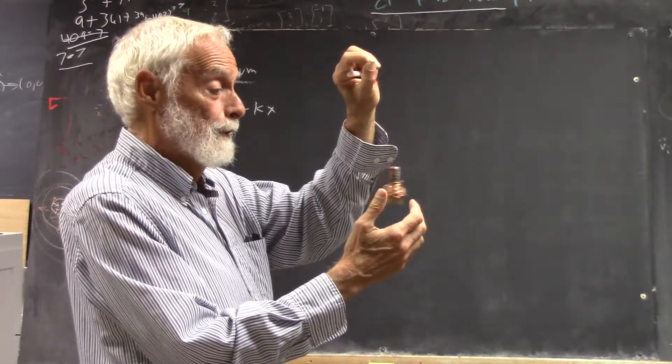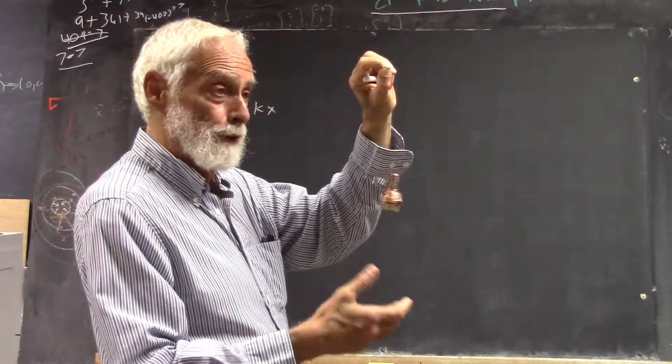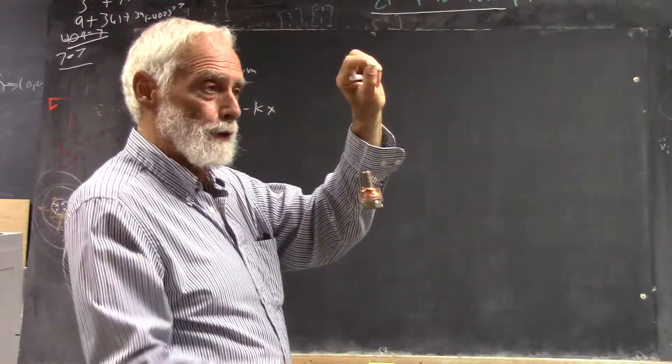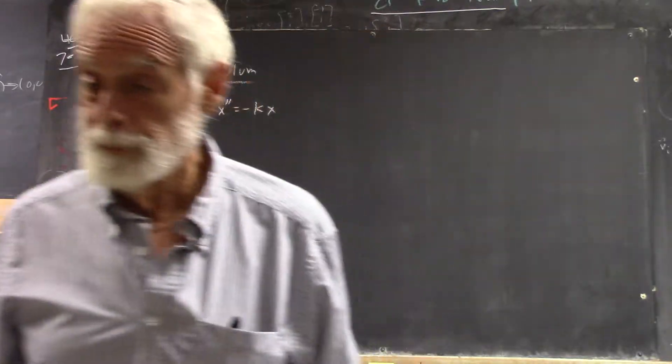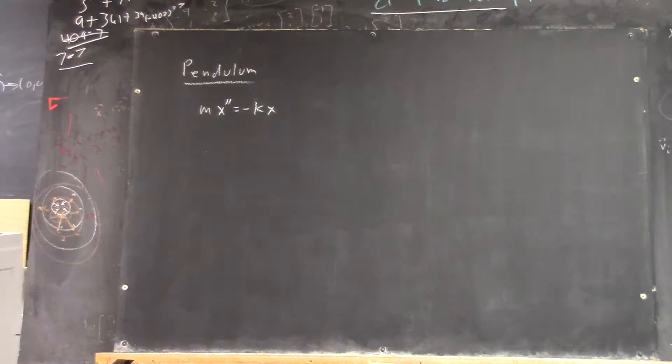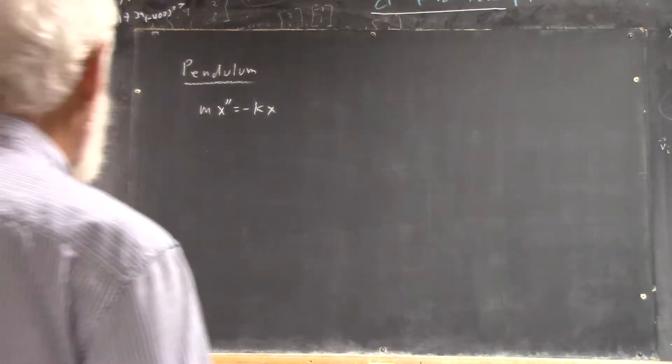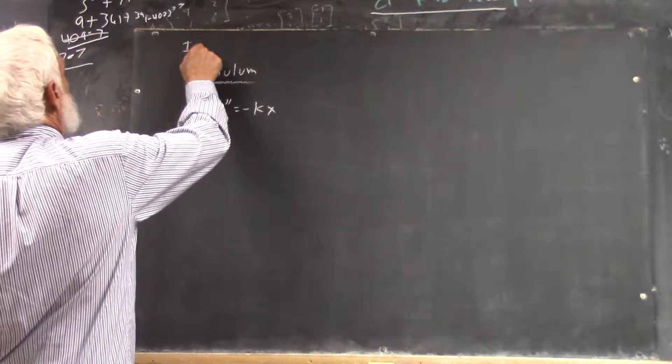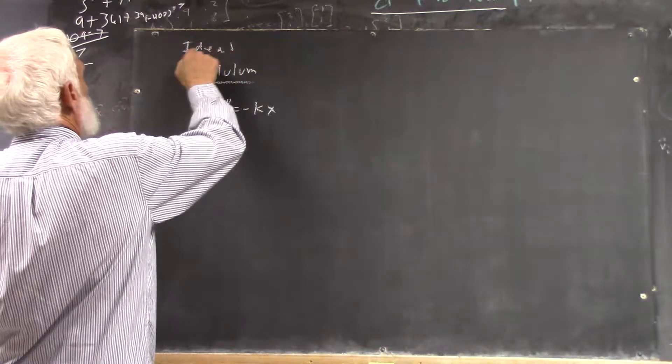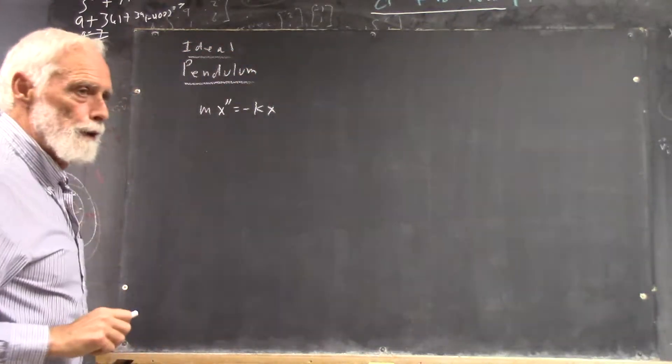It gets over here. As soon as it passes equilibrium, you start getting a component of the force in this direction. It slows it down until it stops and it keeps going. So, in an ideal pendulum, where there's no energy lost, no air resistance, no flexing of the string, no wobbling of my hand, it keeps going forever. Never slows down.